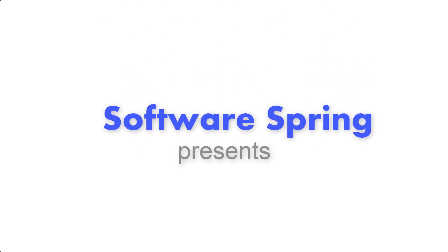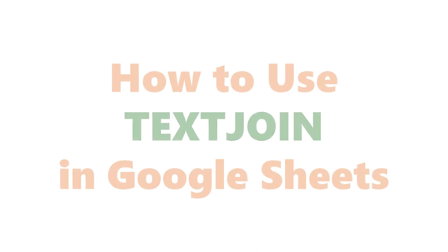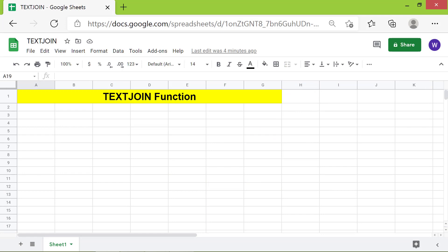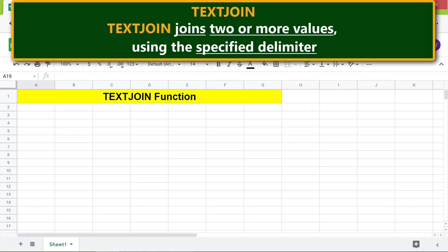Welcome to this tutorial on the TEXTJOIN function in Google Sheets. Here is an introduction to TEXTJOIN: TEXTJOIN joins two or more values using the specified delimiter.